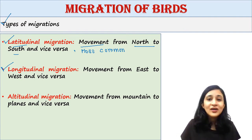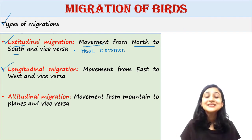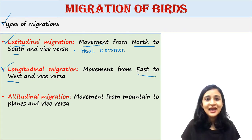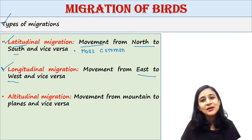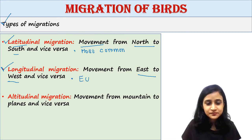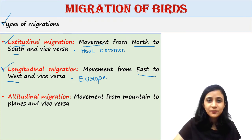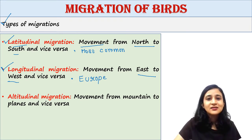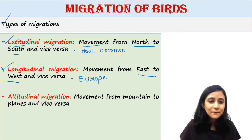Next is longitudinal migration, which is just the opposite of latitudinal migration. From the name you can understand that longitudinal migration means the movement from east to west and west to east. This is a common type of migration for many birds in Europe.